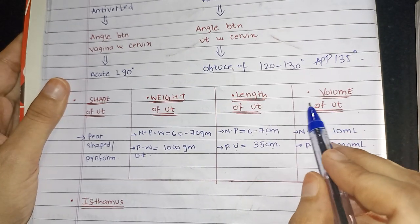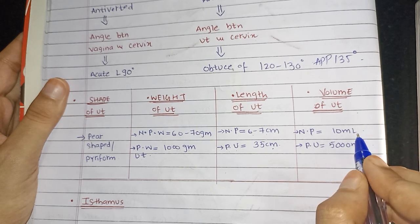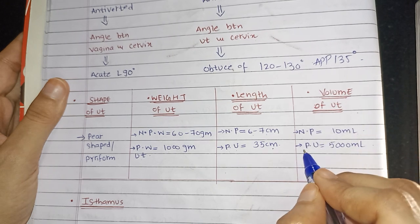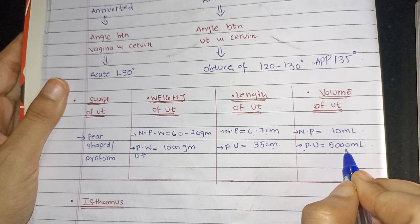The volume of the uterus in a pregnant woman is 5,000 units.